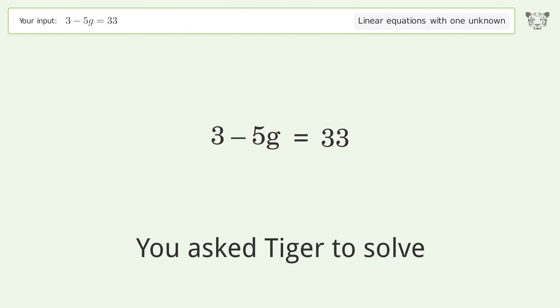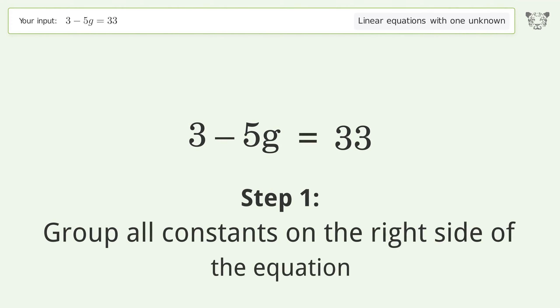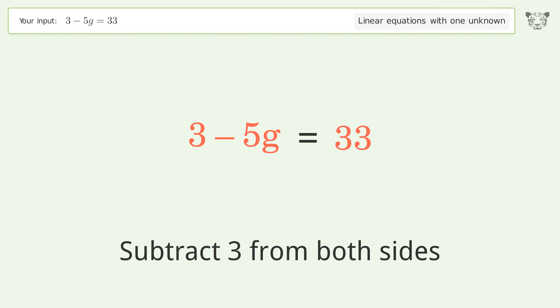You ask Tiger to solve this. This deals with linear equations with one unknown. The final result is g equals negative 6. Let's solve it step by step. Group all constants on the right side of the equation. Subtract 3 from both sides.